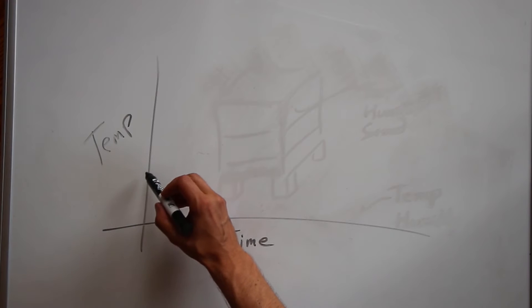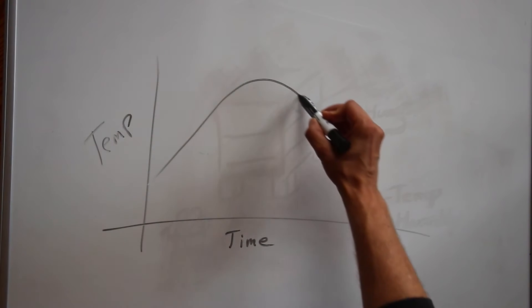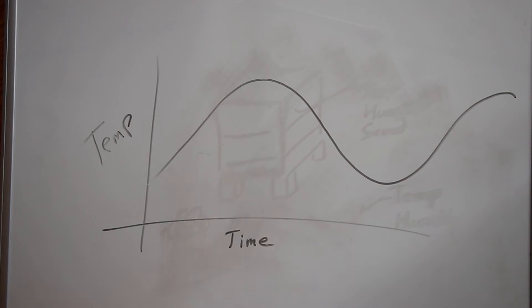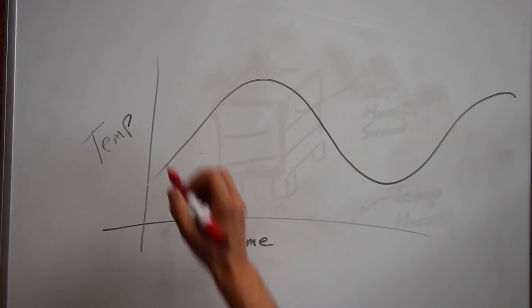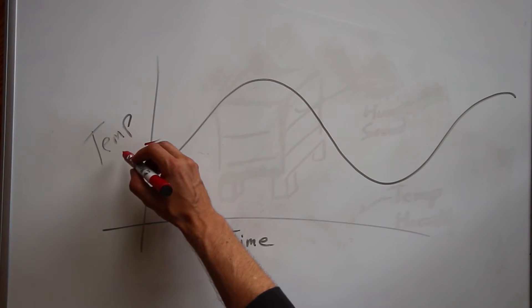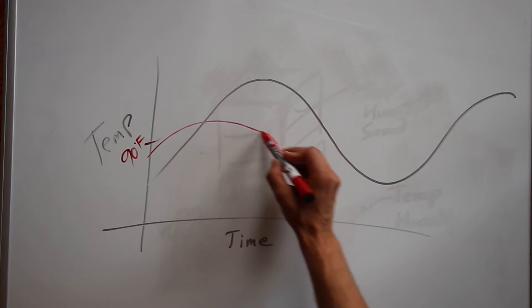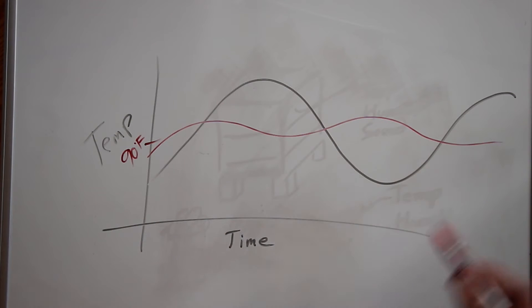All right, so what we expect to see is outside temperature going up during the day, down during the night, up during the day. And then the bees should try to maintain temperature around 90 degrees Fahrenheit. And it'll go something like that.